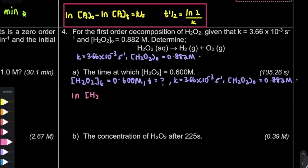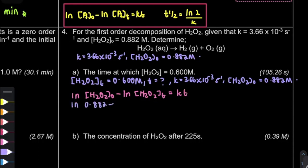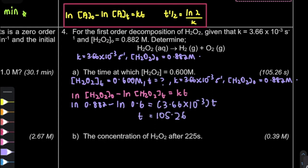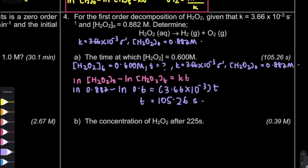For this question we don't use ln[A]; the reactant is H₂O₂, so we write ln[H₂O₂]. We substitute all the values — including the ln terms — and we get our time. Looking at the unit of K, it is per second, so the unit of time is seconds.